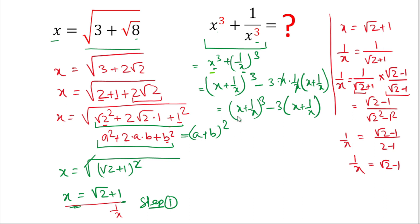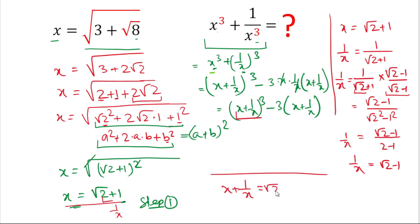Now we calculate the value of x plus 1 over x. The value of x is square root 2 plus 1, and the value of 1 over x is square root 2 minus 1. Adding them: minus 1 and plus 1 cancel, so x plus 1 over x equals 2 square root 2.